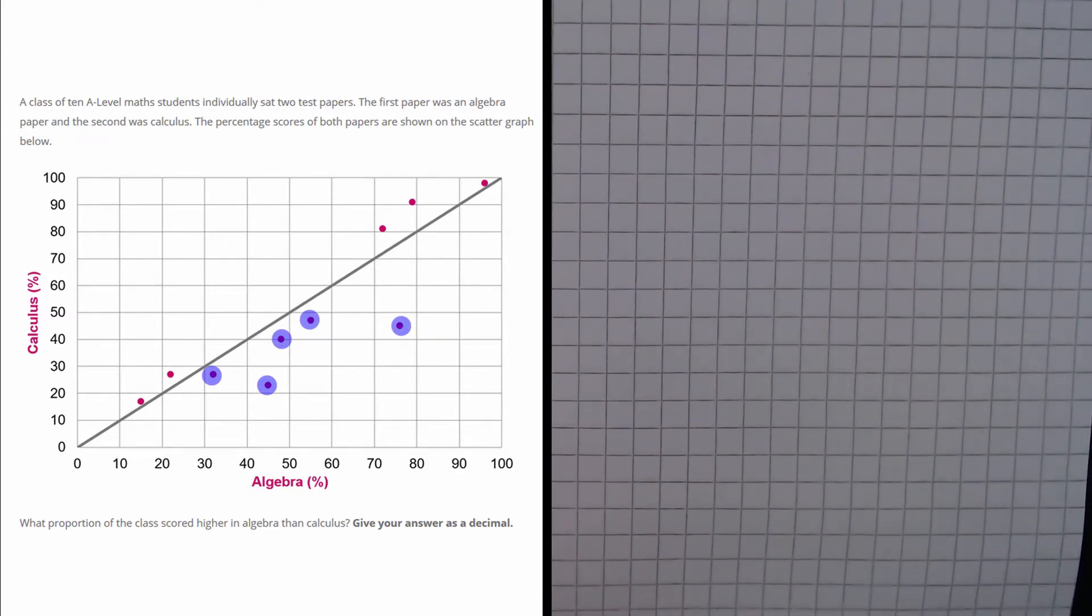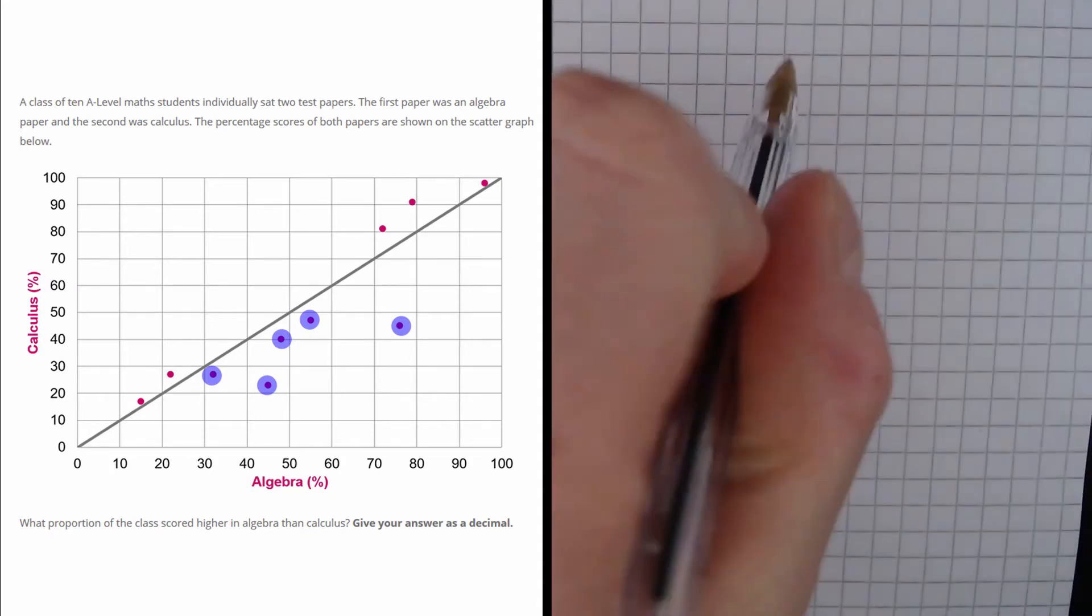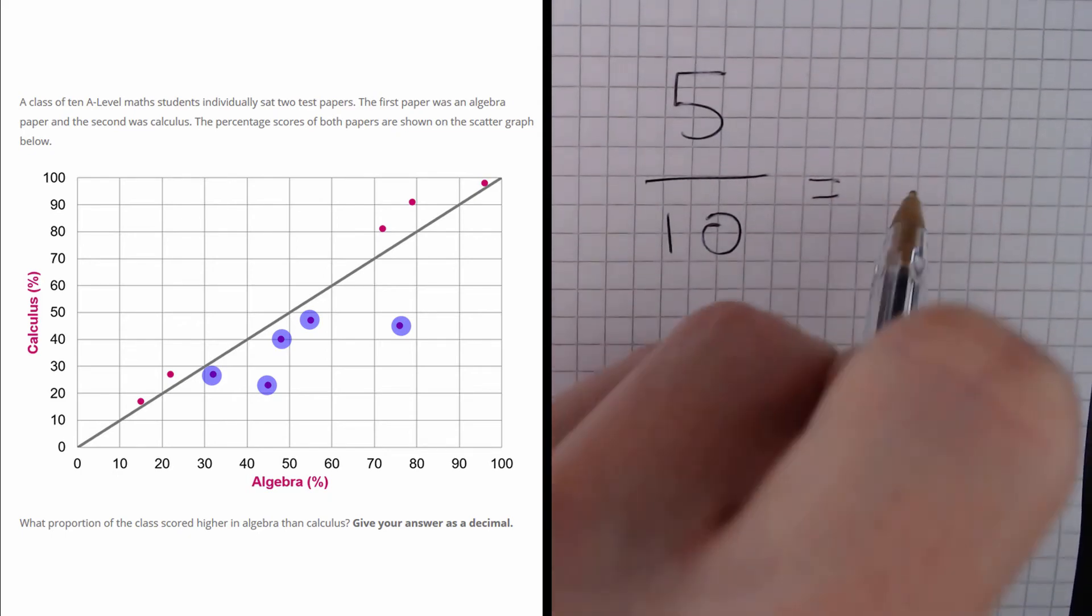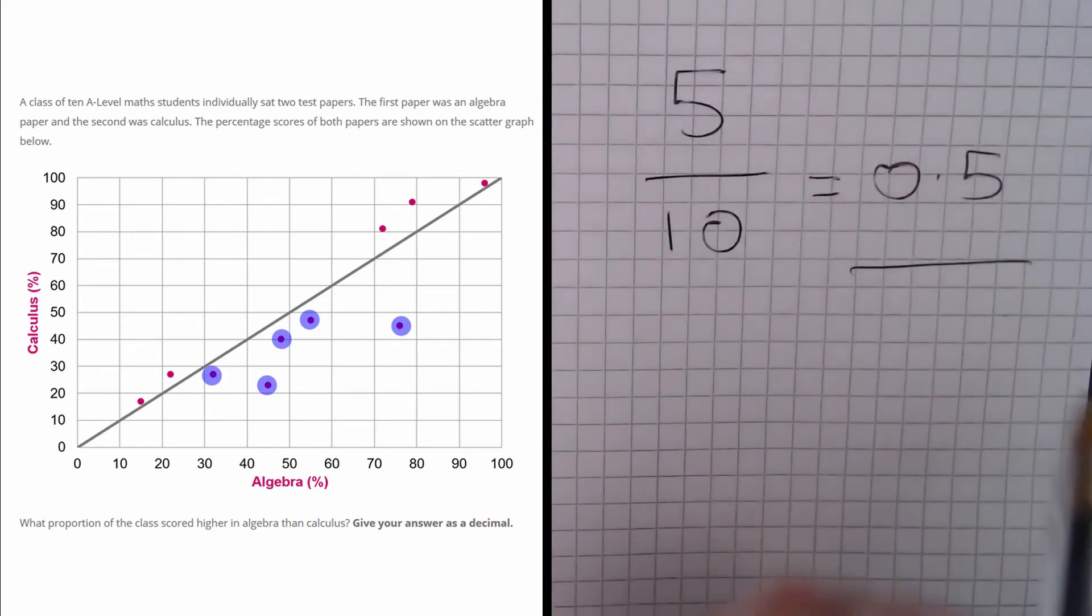So the calculation we need to do is we need to find the proportion, so we do 5 out of a total of 10, which equals 0.5, and that is the answer.